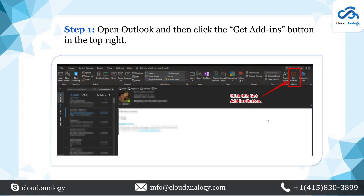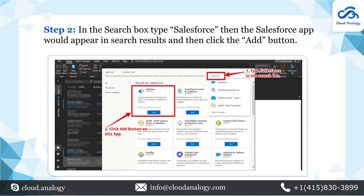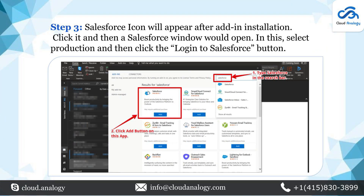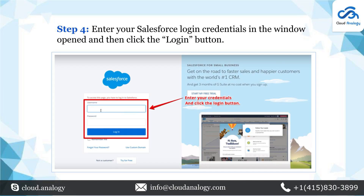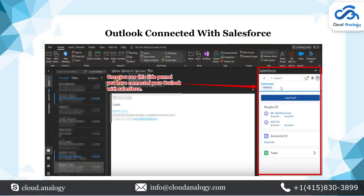You can now open Outlook and click on the Get Add-Ins button in the top right corner. Once this has been completed, type Salesforce and then click the Add button. The Salesforce icon will appear after add-in installation. Click on it and a Salesforce window will open. Select Production and then click the Login to Salesforce button. Fill in your Salesforce login credentials and click the Login button, then click the Confirm button. You can now see the Salesforce window connected.